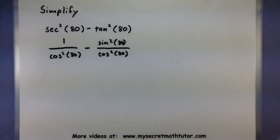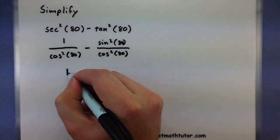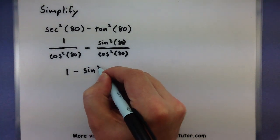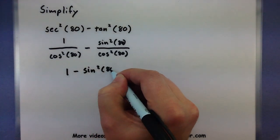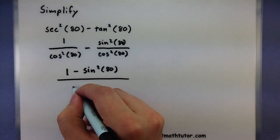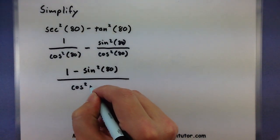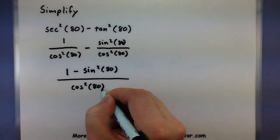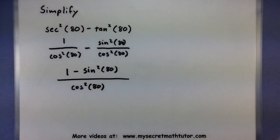So you'll see that if I change these into sine and cosine, they both have the same denominator. Let's go ahead and put them together into a single fraction. So on the top, 1 - sin²(80) all over cos²(80). Now where do I go from here? What am I going to do to simplify?